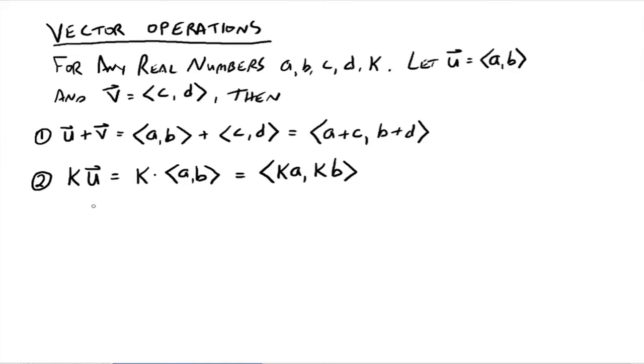Now for part two down here, we have k times some vector u. Well, this is scalar multiplication. And the way it's defined is you have k times the vector, but you take the scalar and it multiplies both components of the vector. So you have ka and kb.